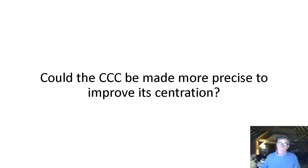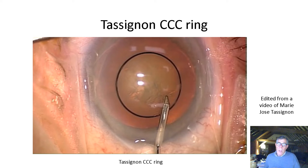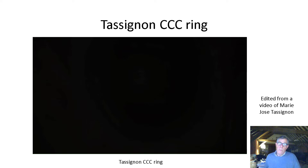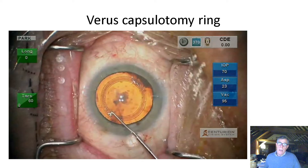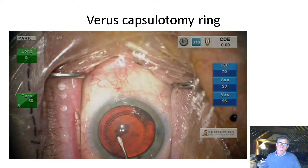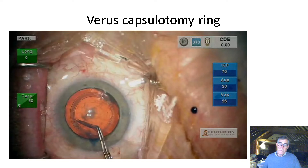Could the CCC be made more precise to improve centration? Here we can see the Tassignon ring, invented by Marie-Josée Tassignon, which is placed on the surface of the capsule centered on the pupillary margin. The problem is that although it is centered on the pupil, it's not centered on the visual axis. We can see something similar with the various capsulotomy rings — again placed on the anterior capsule, centered on the pupil, but not on the visual axis, which is provided by the first Purkinje image.